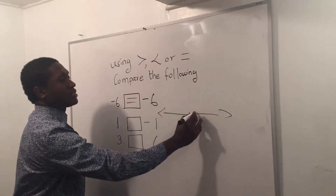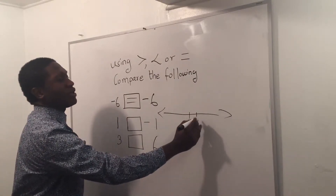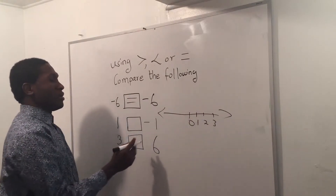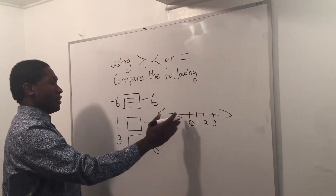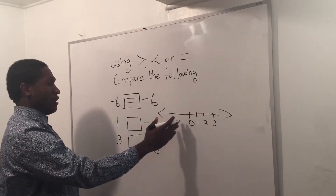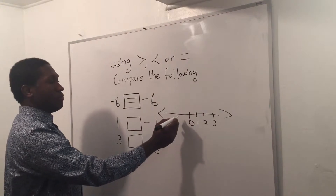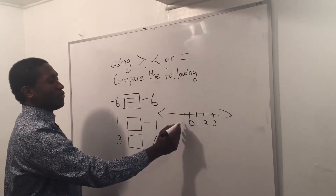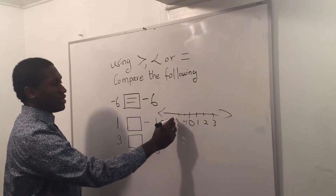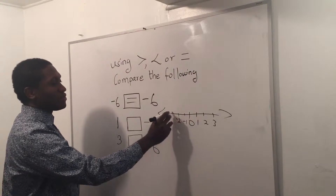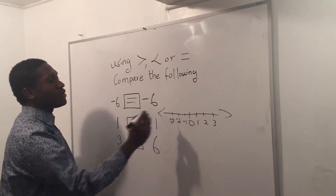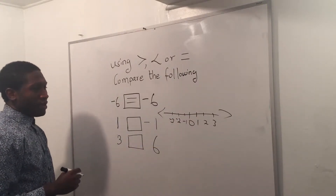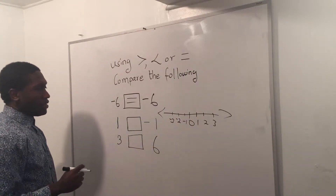On the number line, I have a one right here, and it goes out by one — two, three. On the left side is negative, so negative one, negative two, negative three. That's how I draw my number line.